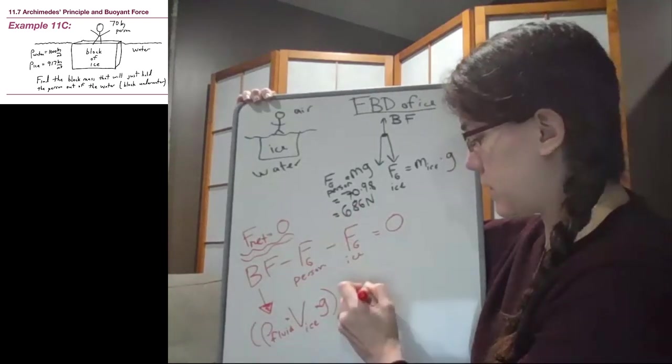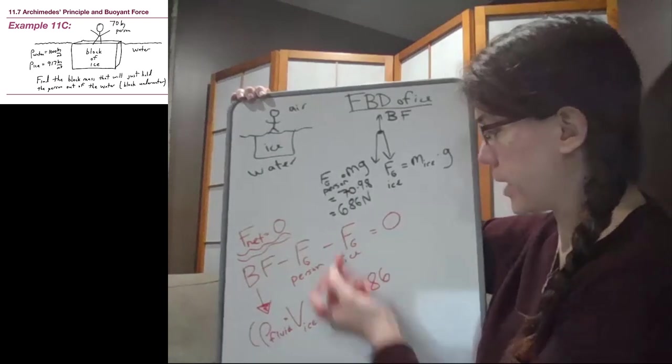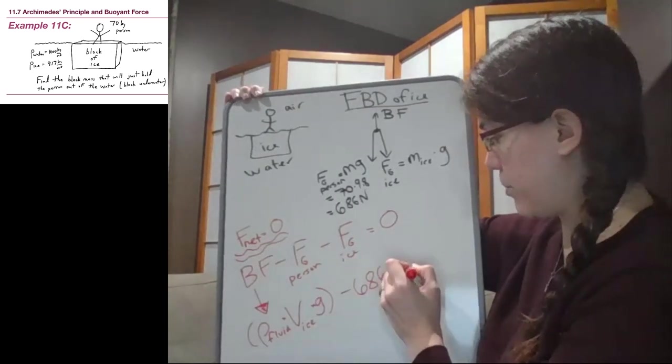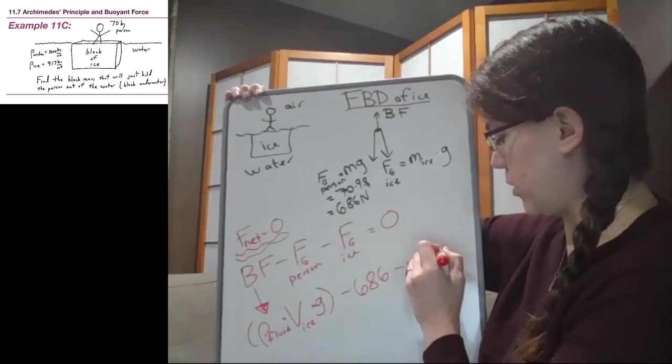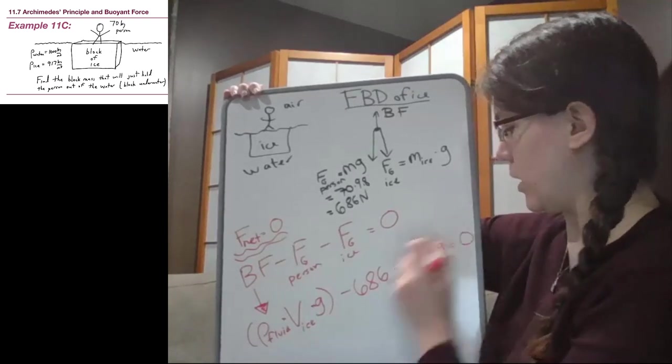For the person we have 686 newtons, and the ice, we have the mass of ice, which is our unknown, times our g value here as well.